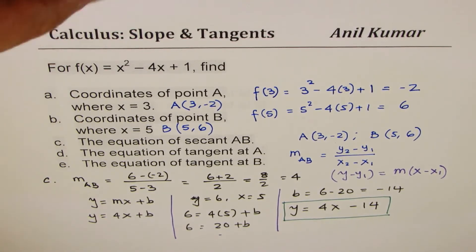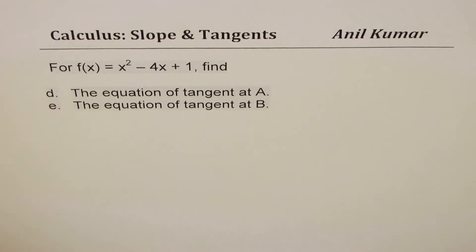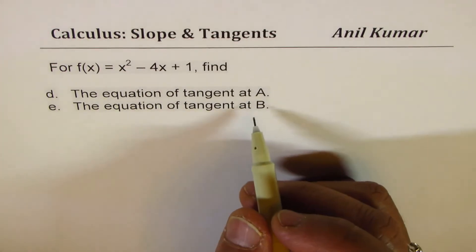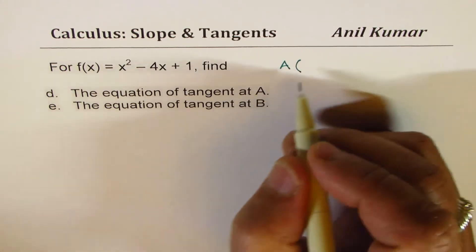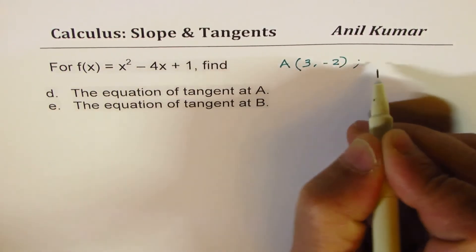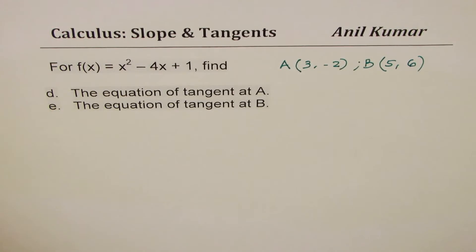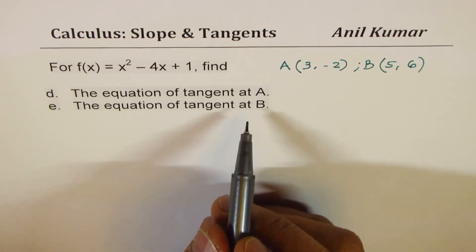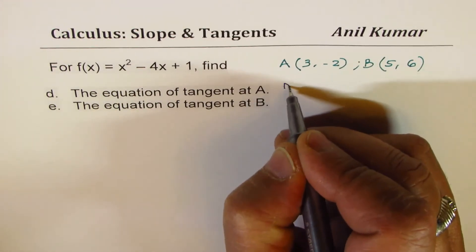Now let's find the equations of the tangents at A and B. We'll use the difference quotient method, which helps find the slope of a tangent line and relates to instantaneous rate of change. Since we have two points, it's better to do the general form first.